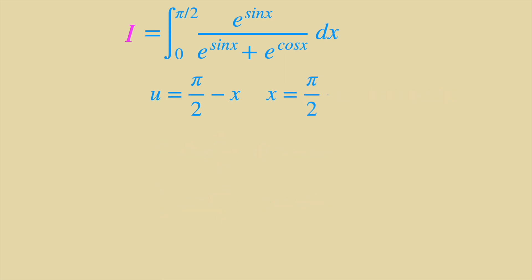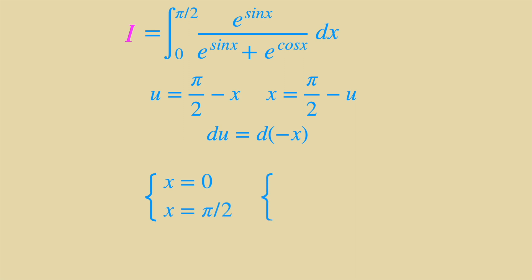So x equals π/2 minus u. Once we do the substitution, we will have to differentiate both sides, so we get du equals negative dx. Notice that x goes from 0 to π/2. So when x equals 0, u equals π/2 minus 0, which equals π/2. And when x equals π/2, u equals π/2 minus π/2, which equals 0.